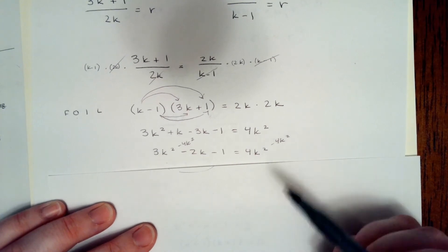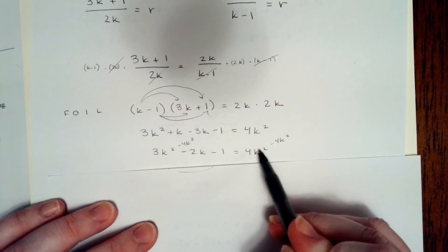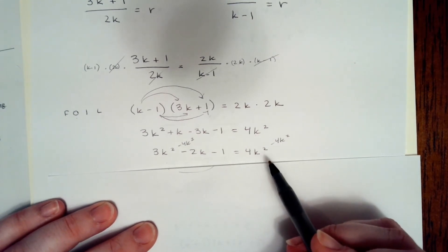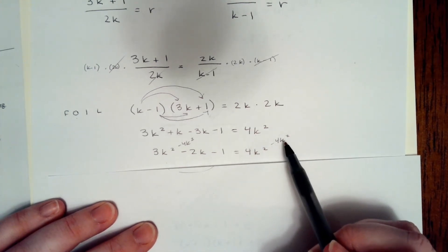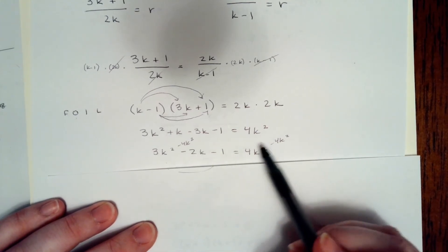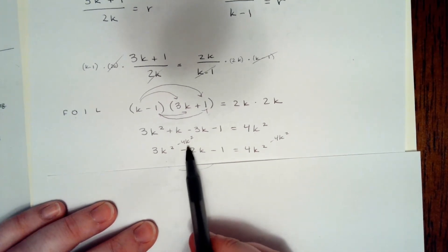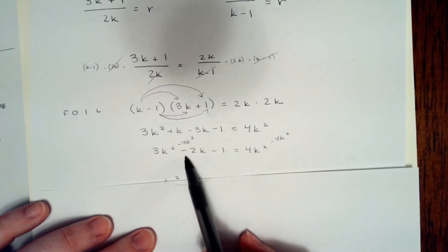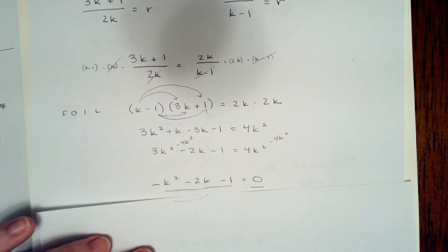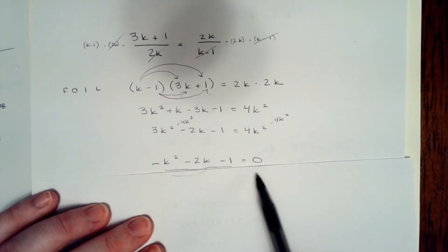Now we need to simplify this problem and solve for k, because we're trying to find out what k is and what the next two terms in the sequence are. Now to solve a quadratic equation, we need it set equal to 0. So we're going to take 4k squared away from this side and put it over here, because that leaves nothing on this side, and that's exactly what we want. 3k squared minus 4k squared, and I did combine like terms in this step from the previous step, so minus 2k minus 1, we're going to get negative k squared minus 2k minus 1 equals 0.